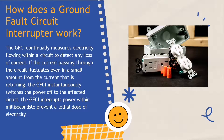The GFCI interrupts power within milliseconds to prevent a lethal dose of electricity. A classic example of the GFCI at work: your toaster is old and has a loose bare wire inside it touching the outer metal housing. If the toaster is plugged in, the housing is charged with electricity. When you touch the toaster housing with one hand while the other hand is touching a grounded metal object like a kitchen faucet, you will receive a life-threatening shock. If the toaster is plugged into a GFCI-protected outlet, the power will be turned off before a fatal shock is delivered through your body.